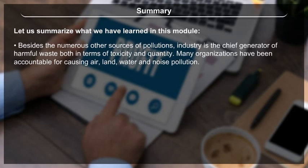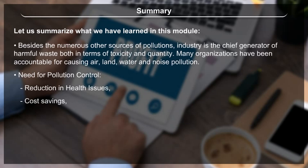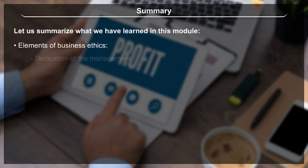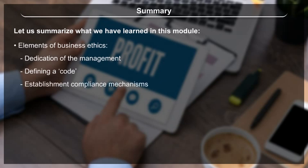Social responsibilities towards various interest groups include responsibility for owners and investors, responsibility towards employees, responsibility towards customers, and responsibility towards the administration and humanity. Industry is the chief generator of harmful waste, and many organizations have been accountable for causing air, land, water and noise pollution. Pollution control leads to reduction in health issues, cost savings, better public image and social benefits. Elements of business ethics include dedication of management, defining a code, establishing compliance mechanisms, and connecting the workforce at all levels.